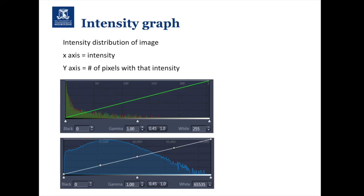Once we've acquired our data we can look at it on something called an intensity graph. On the x-axis we're looking at the intensity — the top example runs from 0 to 255 grayscale values, that's an 8-bit image, and the one below goes from 0 to 65,000, that's a 16-bit image. On the y-axis we're looking at the number of pixels with that intensity. The lower end is the black background within your image, and further out are the brighter sections.